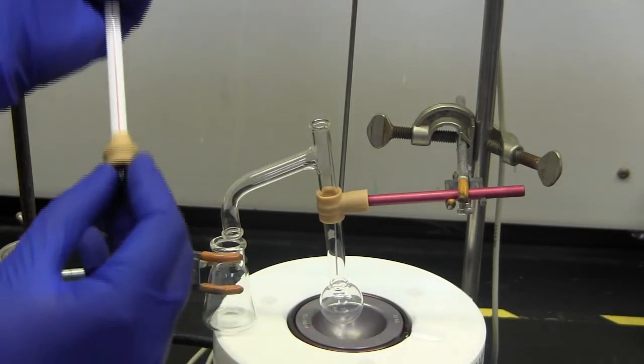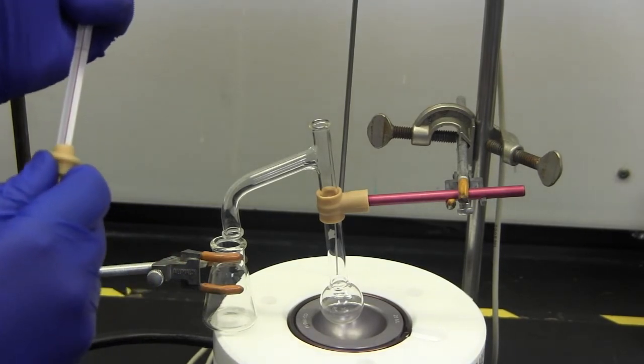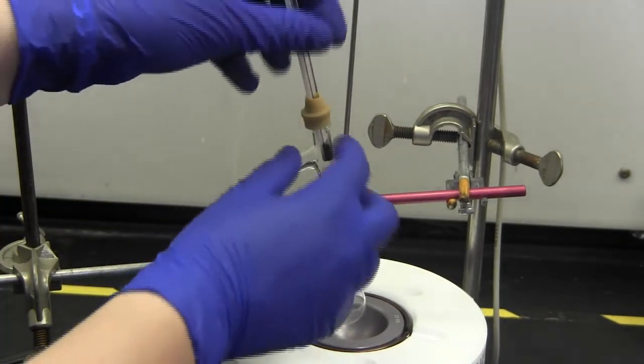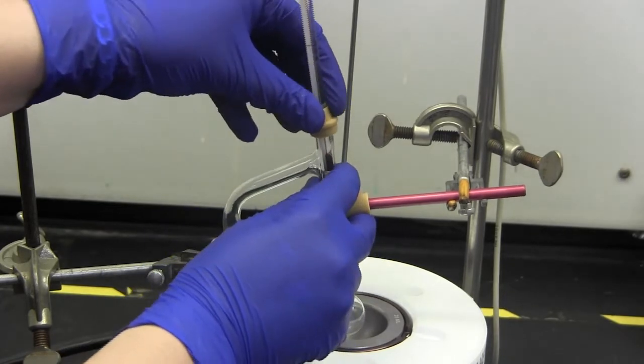Carefully insert the glass thermometer through the top opening, using a rubber fitting to make sure it is snug. The thermometer's tip should be about where the branching setup occurs.